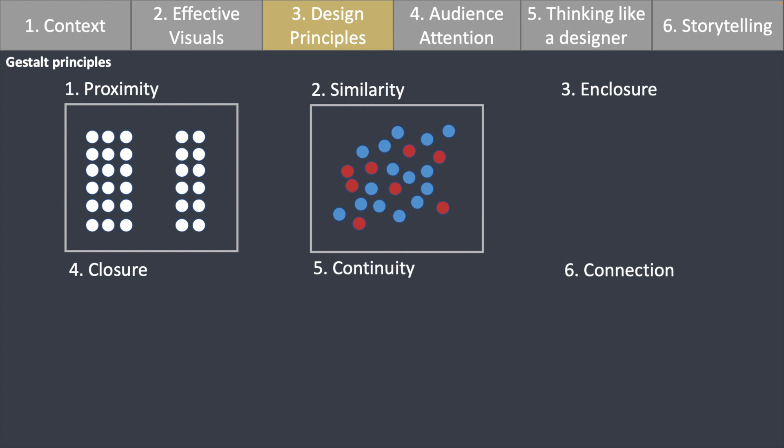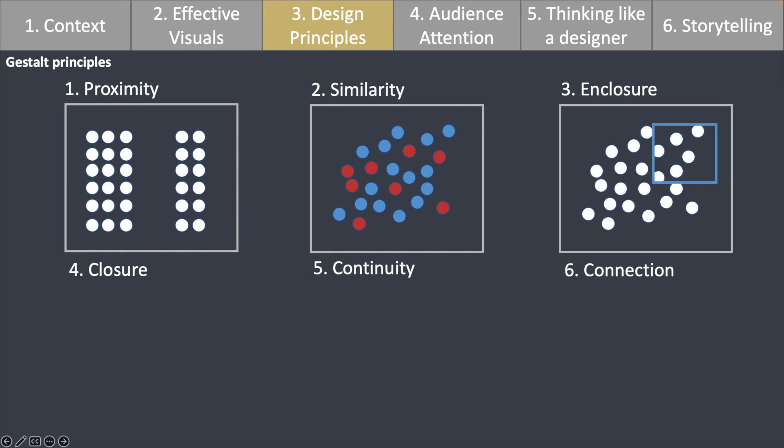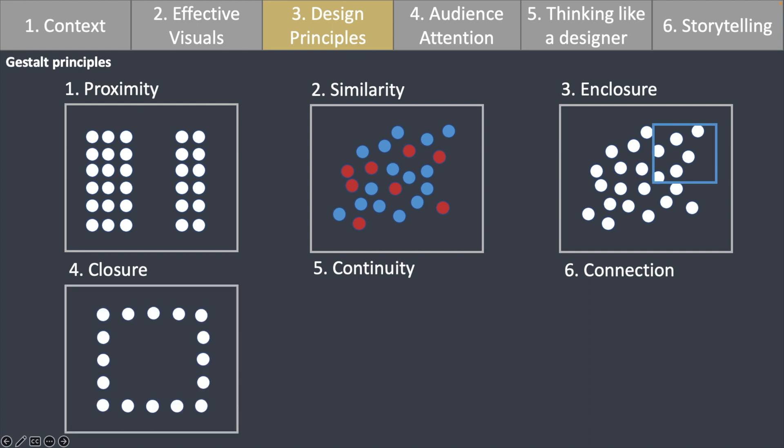For enclosure, it refers to a boundary and what is drawn within that boundary. And next we have closure, which is somewhat similar to enclosure. The idea of closure is how we perceive a visual — even though individual dots are separate objects, when we place them in a certain manner, we identify them as a square. We naturally draw a connection between these spaces and identify that a boundary is created by these individual objects.